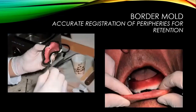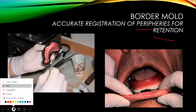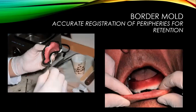In the next step you recall the patient and carry out border modeling. You need to record the accurate registration of the peripheries for retention. You record the peripheral borders so that your denture can have great retention. As you can see in this picture, this is the custom tray made from the primary impression using acrylic. At the periphery, an impression material — zinc oxide eugenol — is being used here.